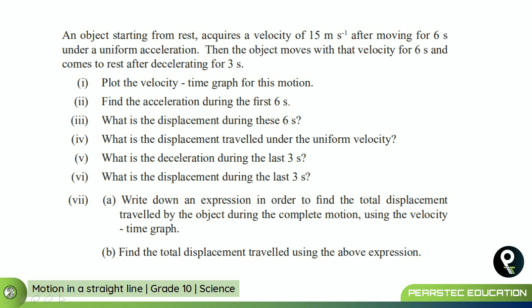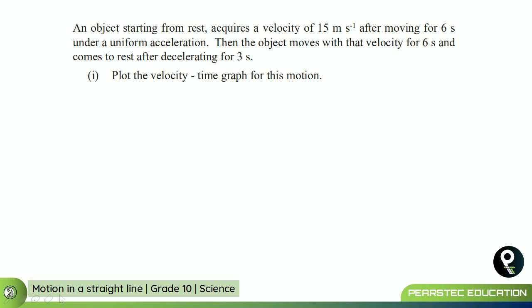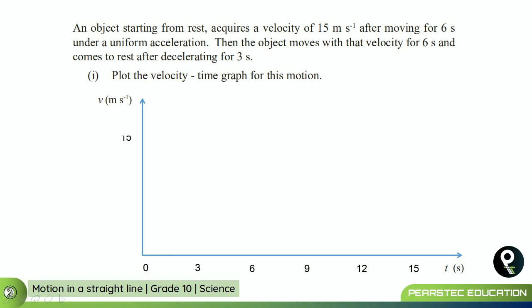Now we have a question from your book. We have seven questions to work through one by one. The object starts from rest and reaches a velocity of 15 meters per second after moving for six seconds. We plot the velocity on the y-axis and time on the x-axis, and we have divided the graph accordingly.